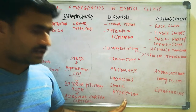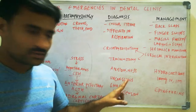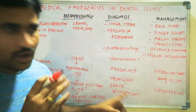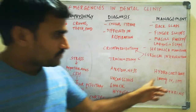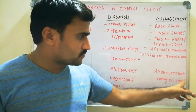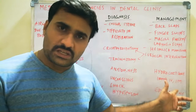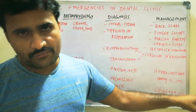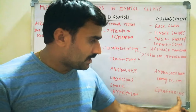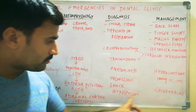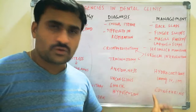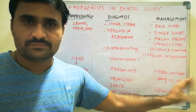Clinical features of adrenal insufficiency include anxiousness, unconsciousness, shock, and hypotension — with shock and hypotension being the more prominent features. Treatment: give hydrocortisone 100 mg intramuscular or intravenous. Epinephrine can also be given to counter the hypotension. Hydrocortisone and epinephrine are the management drugs for adrenal insufficiency.